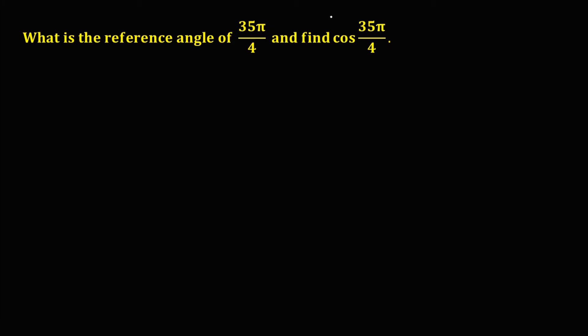Since we're looking for the value of cosine 35π over 4, we first need to find the coterminal angle of 35π over 4, in order to know at what quadrant the terminal side of this given angle lies.